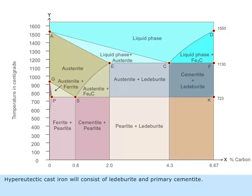Hypereutectoid cast iron will consist of ledeburite and primary cementite.